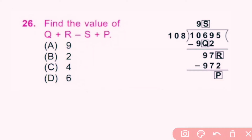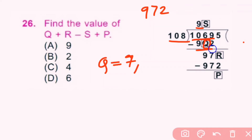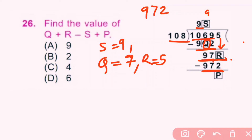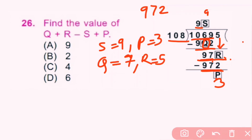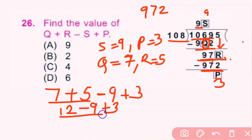Question number 26: Find the value of q + r − s + p by completing the given addition matrix. First, 108 × 9 = 972, so q = 7. Then 1069 − 972 = 97, so r = 5. From 975 − 972, p = 3. With q = 7, r = 5, s = 9, p = 3: 7 + 5 = 12; 12 − 9 = 3; 3 + 3 = 6. D is the correct answer.